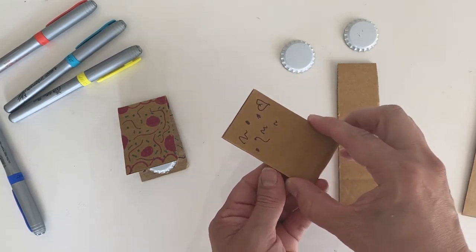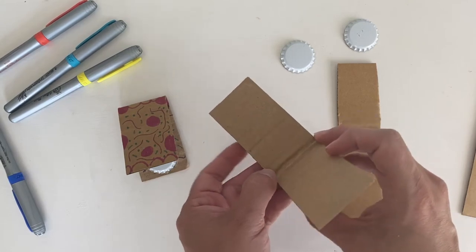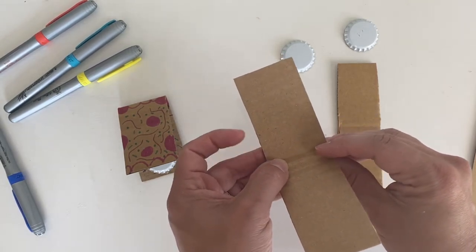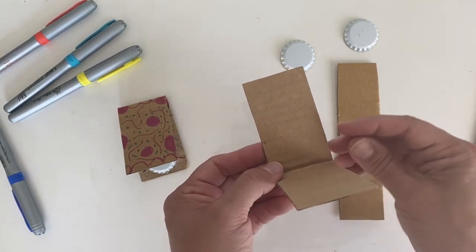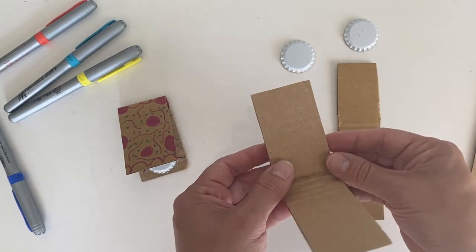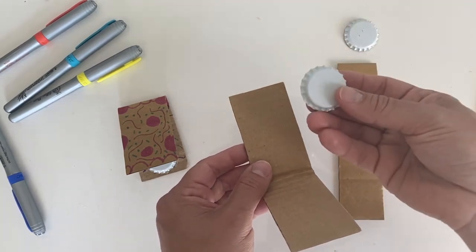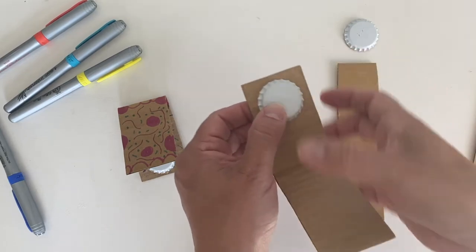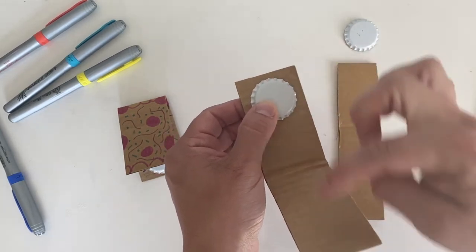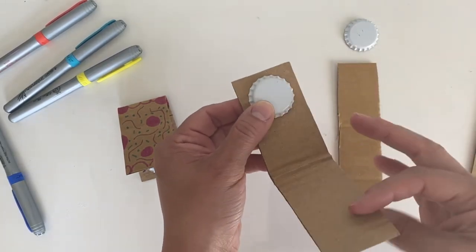Now this is the part that requires some adult assistance if you are not allowed to use a hot glue gun. You will be hot gluing your bottle cap to each end. You want them on each end so that they can hit each other when this closes.